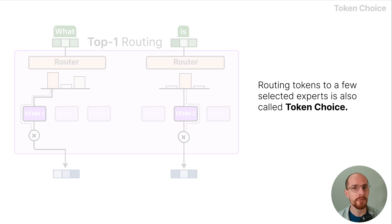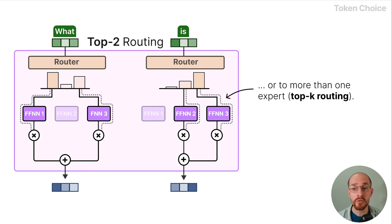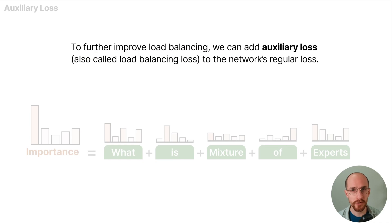Routing tokens to a few selected experts is also called token choice, and allows for a given token to be sent to either one expert and that's called top one routing or to more than one expert. We call this top k routing, k for how many experts you select. To further improve load balancing we can add auxiliary loss which is also called load balancing loss to the network's regular loss.